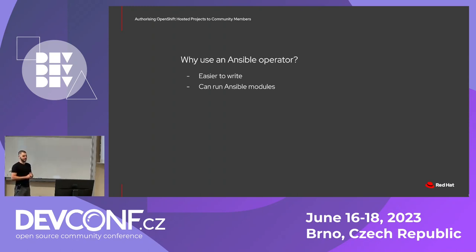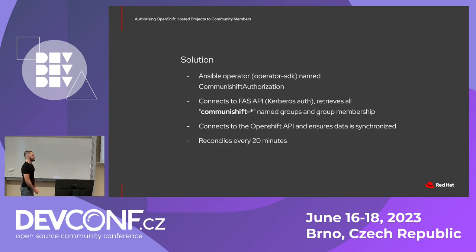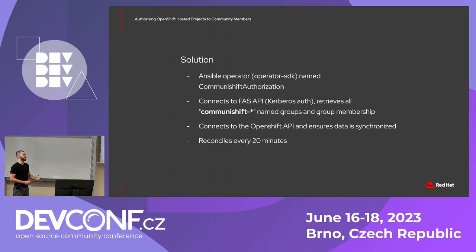You also have immediate access to any module that Ansible can run, including custom modules that you can write, which is also what we did as part of this initiative. The solution to the problem was to write an Ansible operator named community shift authorization, which connects to the Fedora account system API, retrieves all of the community shift named groups and the group membership, then connects to the OpenShift API and syncs it. You can configure how often it should reconcile; we went with 20 minutes.